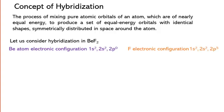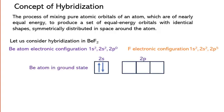Let us not consider 1s electrons in discussion as they do not take part in bonding. In its ground state, beryllium has no unpaired electrons for bonding.